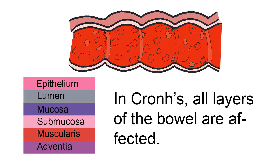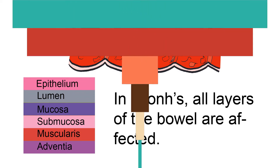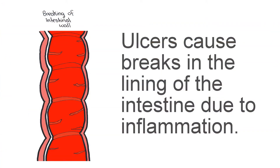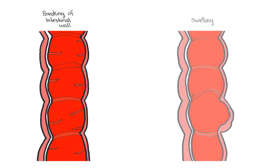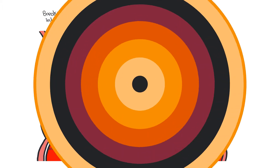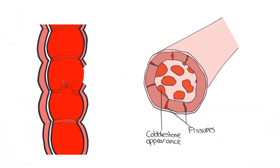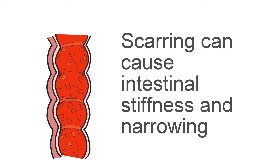In Crohn's, all the layers of the bowel are affected, but inflammation affects the submucosal layer the greatest. Ulcers cause breaks in the lining of the intestine due to inflammation. They then become larger and deeper, and with the expansion of the ulcers comes swelling of the tissue. This causes abdominal pains and contributes to symptoms such as fever. The deepening ulcers can fully penetrate the intestinal wall and enter nearby structures, which contributes to diarrhea and decreased nutrition absorption. Scarring can then occur, which causes intestinal stiffness and narrowing, and can cause rectal bleeding.